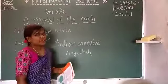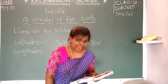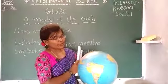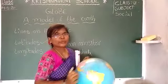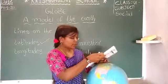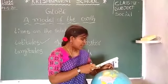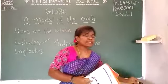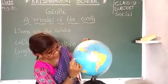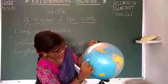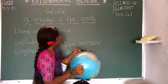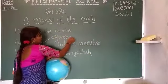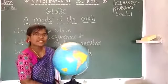Latitudes. They are the imaginary lines that are drawn from west to east. They are running west to east. Can you spot these lines? Compare the length of these lines. The longest line is in the middle. That line we call it as the equator. The longest line in the middle is 0 degrees.